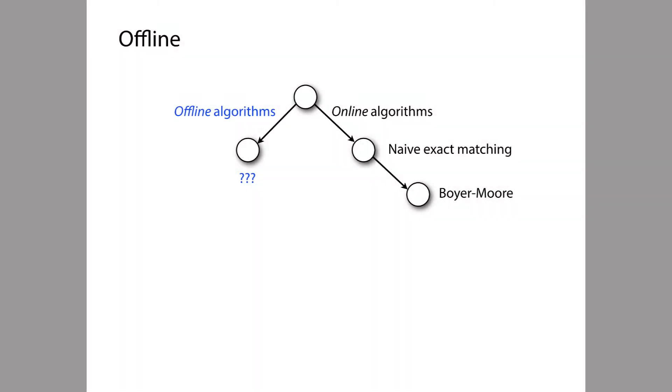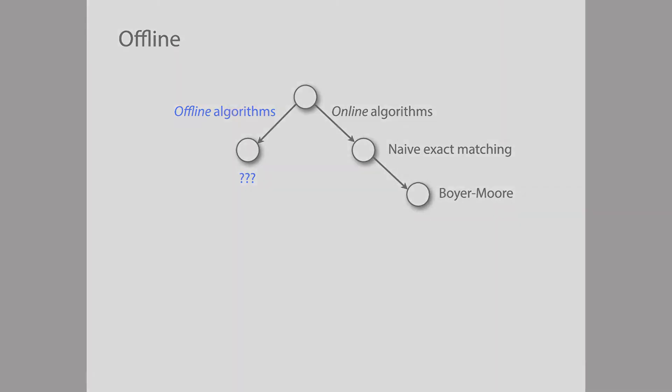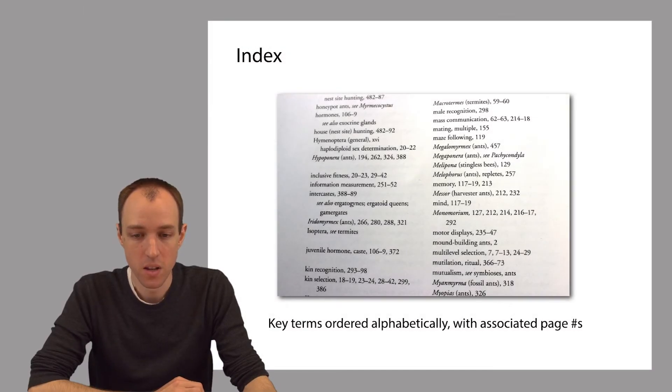To understand how we might do this, we can use a couple of analogies. One kind of text we might consider is a book, and one familiar way to preprocess a book is by indexing it. An index is basically a list of key terms, and each key term is associated with a list of places, pages in the book, where it's mentioned.